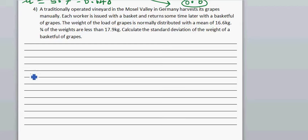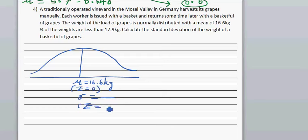Let's draw a normal curve. You want to find the standard deviation. We know mu is 16.6 kg. Whenever you have to find mean or standard deviation, you use the z-score. The z-score for mean is 0, and the z-score for standard deviation is 1.